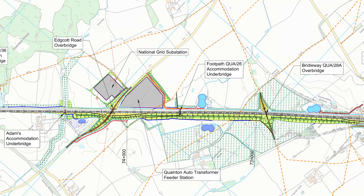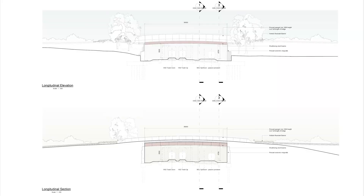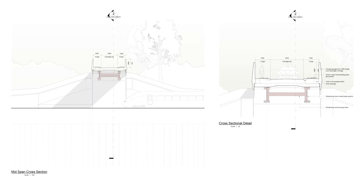We now leave Quainton and cover the area around Dodgershall and Edgecott. There are four bridges along here. The first structure we come to is QUA 28A Overbridge. The design of this is very similar to others in that it has steel supports and concrete parapets.